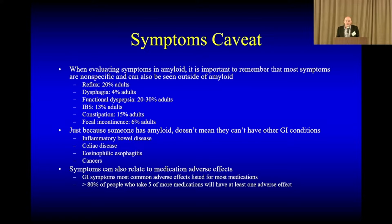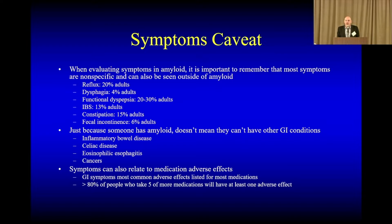Reflux is seen in about 20% of U.S. adults at least once a week, 50% at least once a year. Swallowing issues are seen in about 4% of American adults. Discomfort or early satiety can be seen in as many as 30% of people. Constipation about 15%, and diarrhea about 6%. So it's hard to know when these symptoms are present whether they're related to amyloid or not. Also, just because someone has amyloid doesn't mean they can't have something else, so we need to make sure we're not missing cancers, celiac disease, and other conditions.